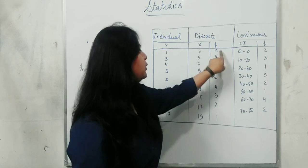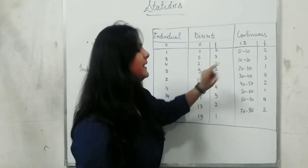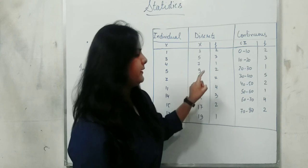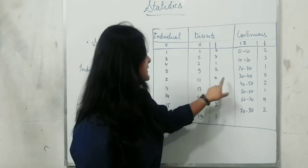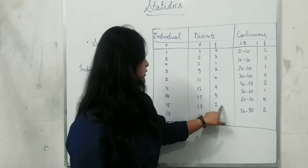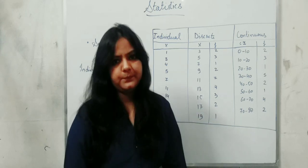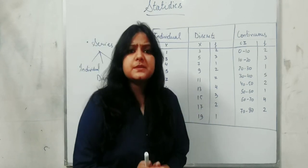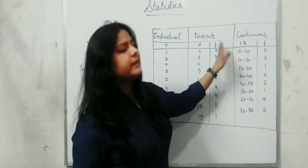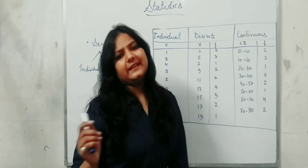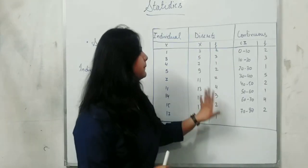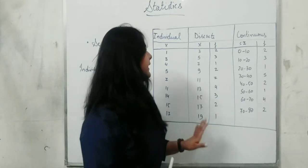For example: 3 appears 2 times, 5 appears 3 times, 7 appears 1 time, 9 appears 2 times, 11 appears 7 times, 13 appears 4 times, 15 appears 3 times, 17 appears 2 times, and 19 appears 1 time. So, frequency means the number of times data is being repeated. I think the discrete series is now clear.